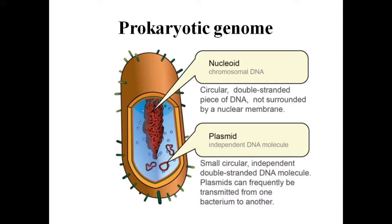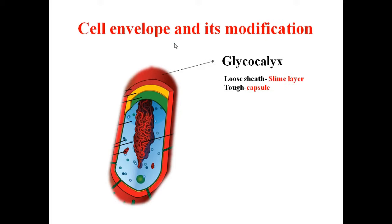Next, we will see prokaryotic cell envelope and its modifications. Most prokaryotic cells, particularly bacterial cells, have a chemically complex cell envelope. The cell envelope contains a tightly bounded three-layer structure. The outermost layer is the glycocalyx, which could be a loose sheath — meaning a slime layer — or in some cases a thick and tough capsule.